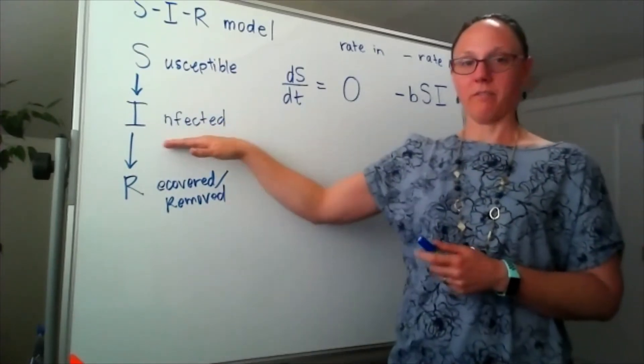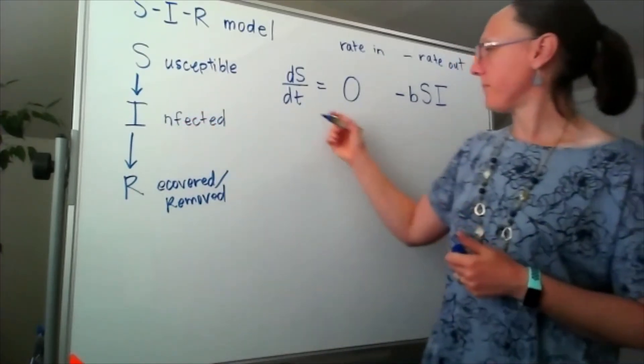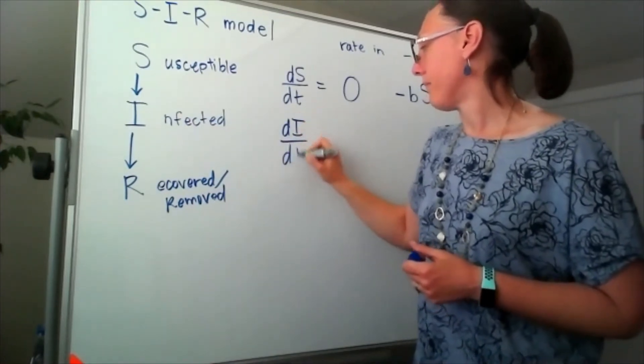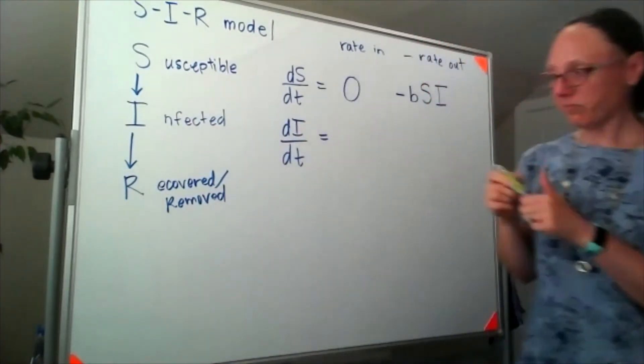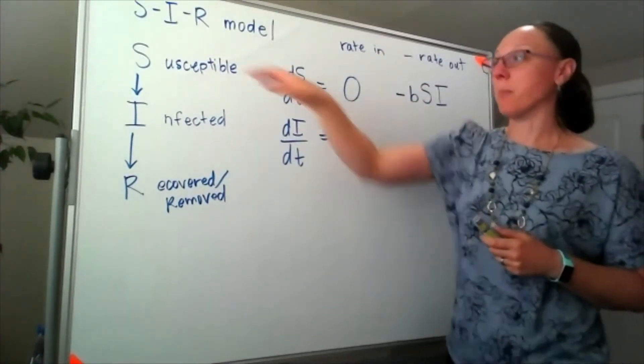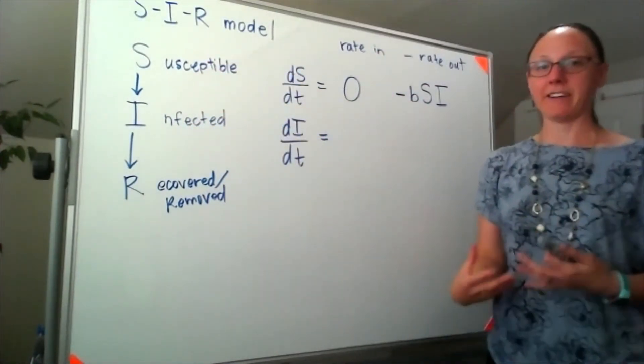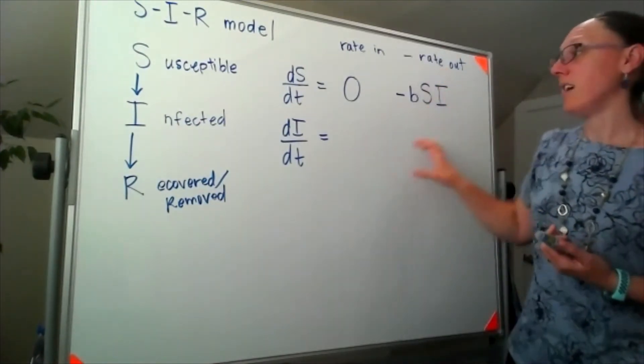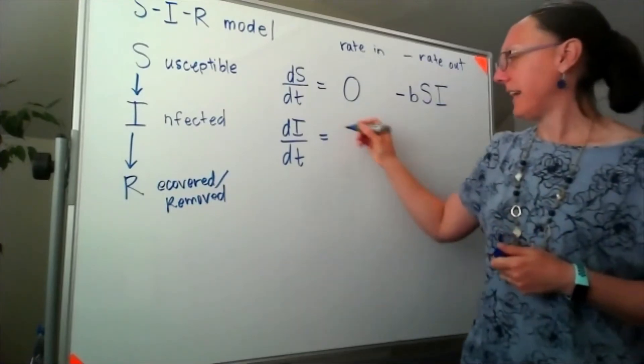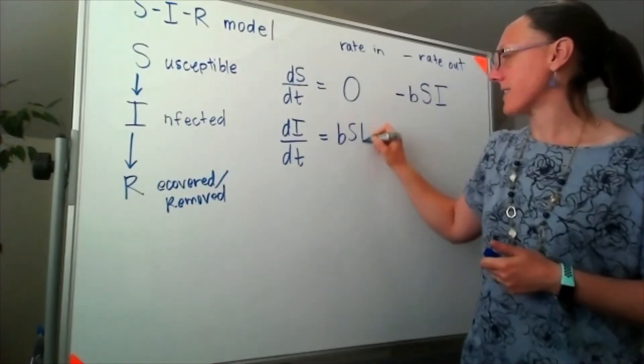Now let's look at the number of infected individuals. Well, for that rate in, the people that are moving into that infected phase are the ones that are coming out of our susceptible phase, which means that rate in is BSI.